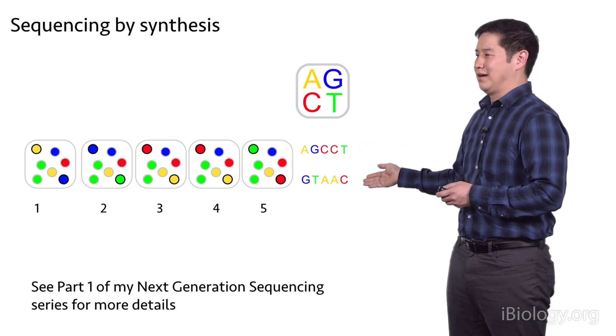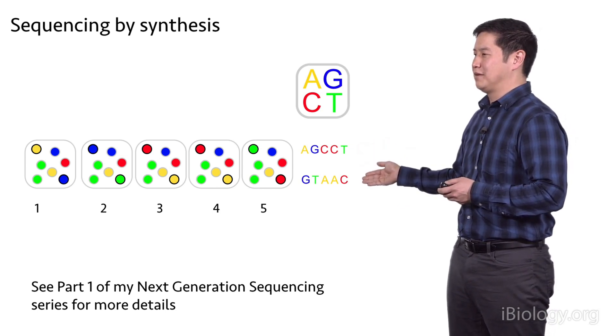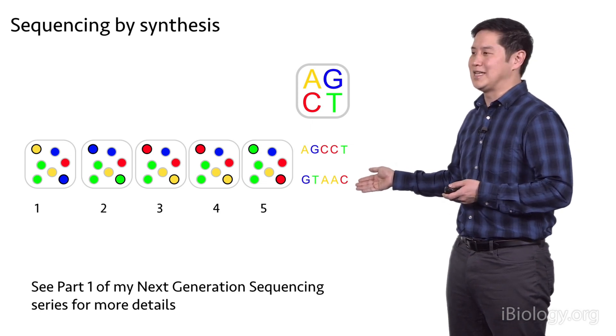With the bottom right-hand cluster, it's blue, green, yellow, yellow, and then red. This can be decoded as GTAAC.